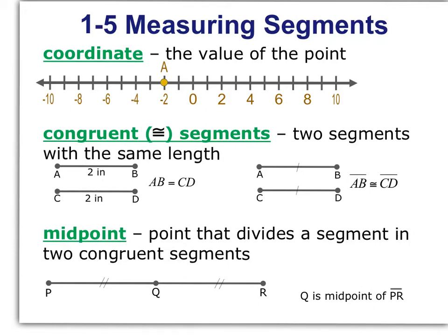Now let's look at section 1-5, measuring segments, and in this section we're going to be doing a little bit of algebra too. Some vocab to get started. Coordinate is the value of the point. So on your number line you'll see we have point A. Point A has a value of negative 2, so negative 2 is its coordinate.